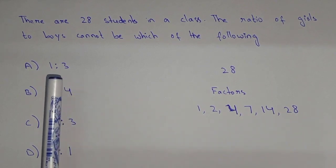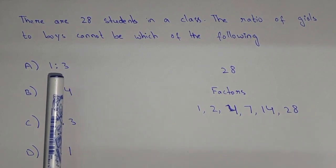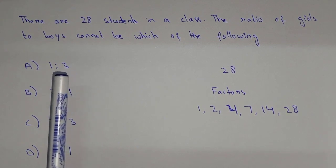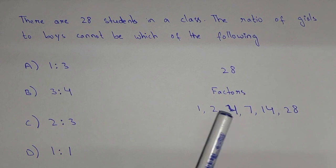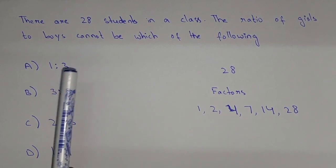So here we have this is the ratio, 1 is to 3. So 1 plus 3, that is 4. So 4 is a factor, it means this is not the answer.